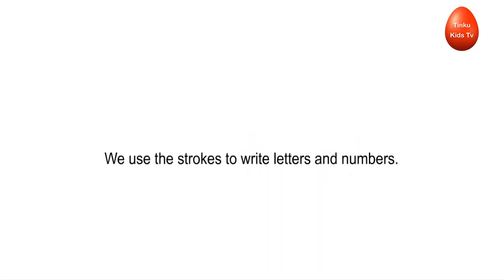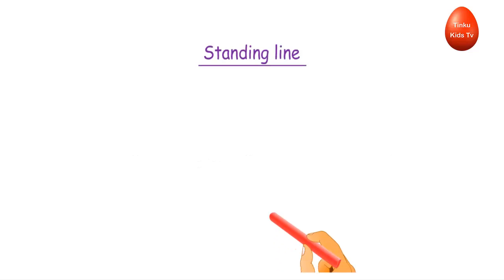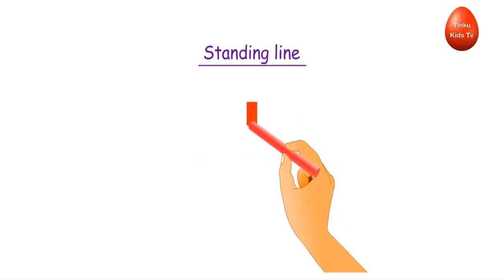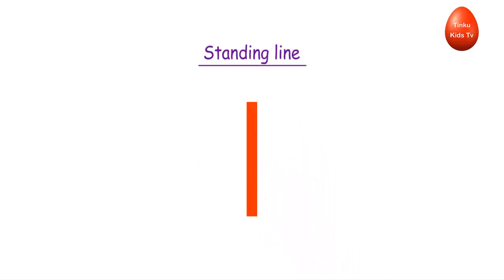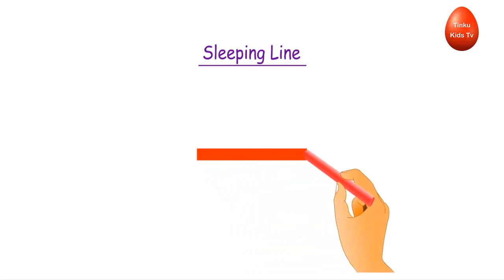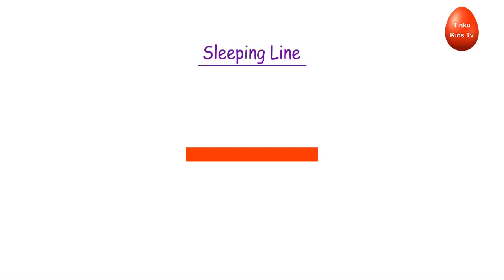Strokes. We use strokes to write letters and numbers. Standing line — this is a standing line. Sleeping line — this is a sleeping line.